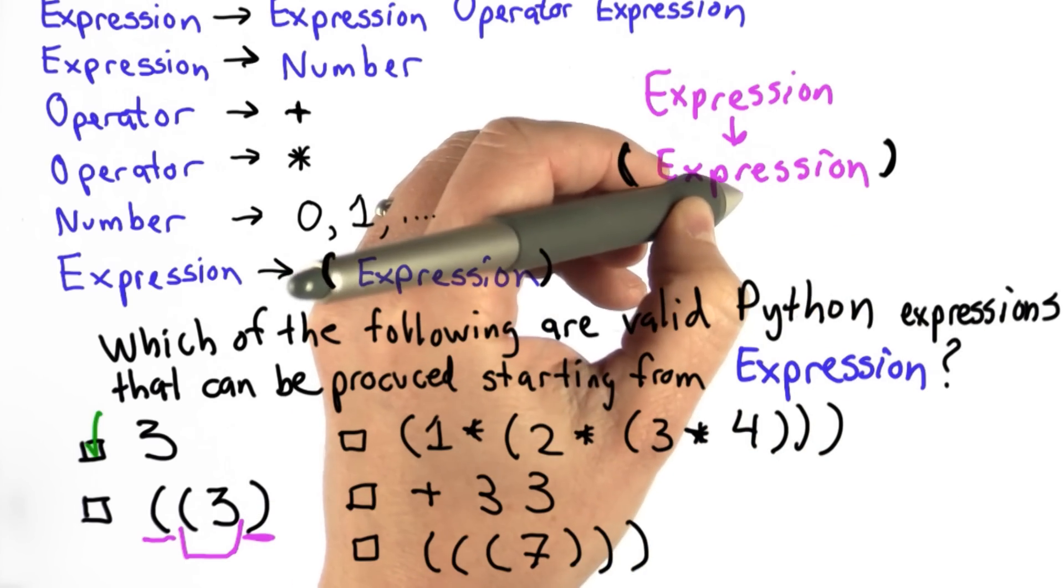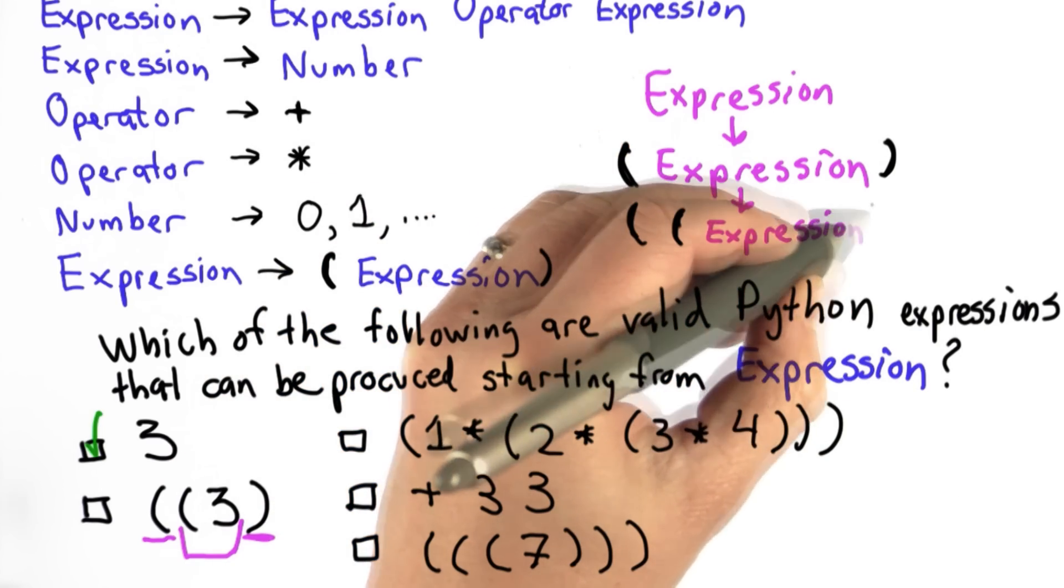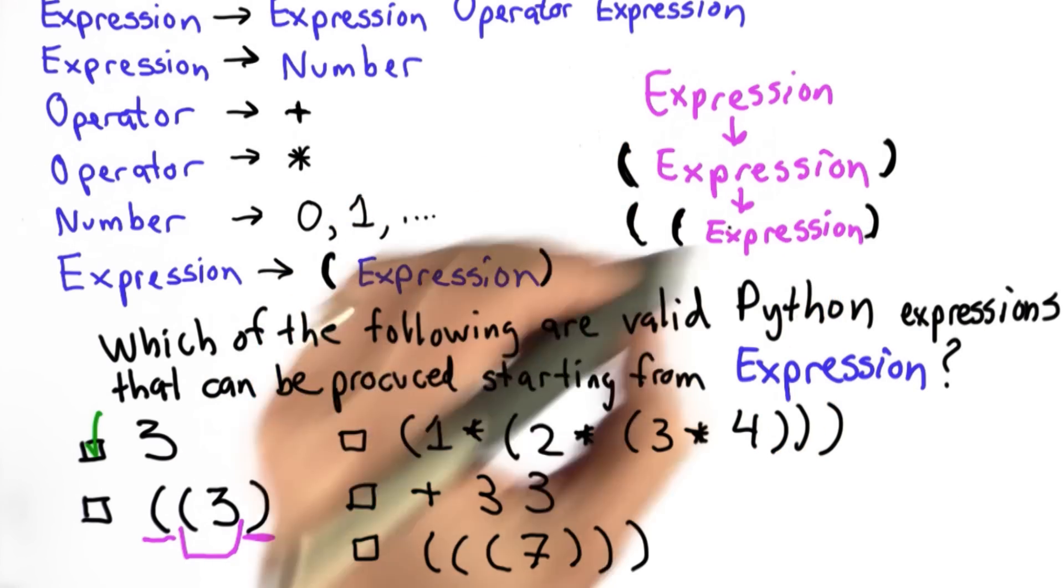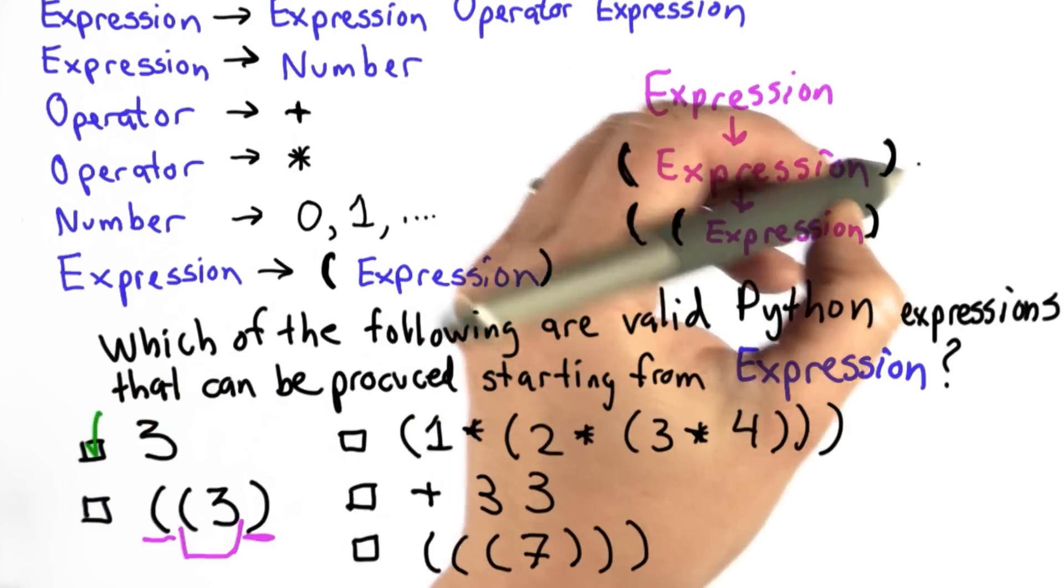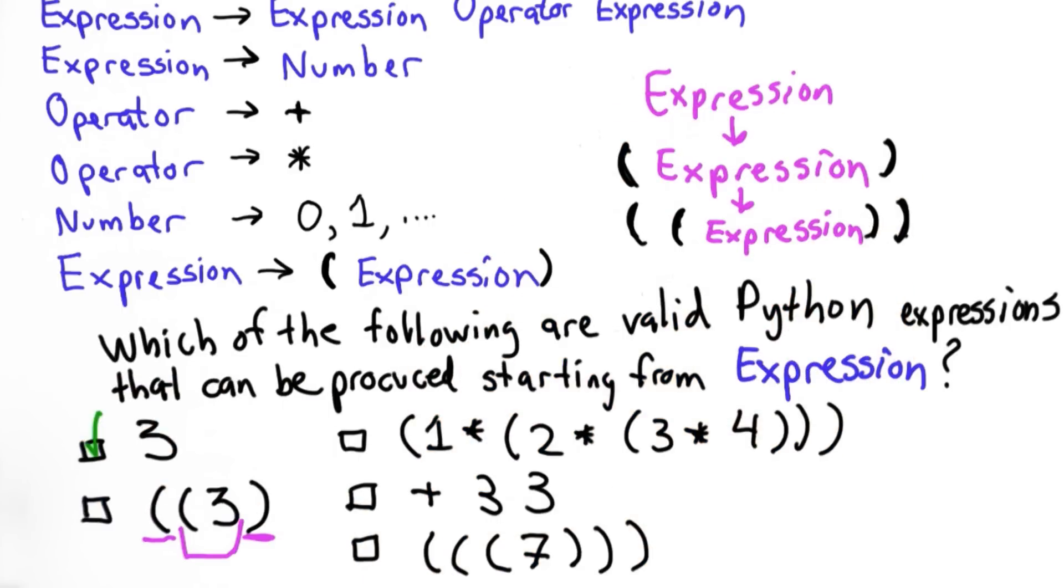We can replace this expression with paren expression, and we have paren. That's replacing this expression using this rule. And then we still have the second right paren that we had before.